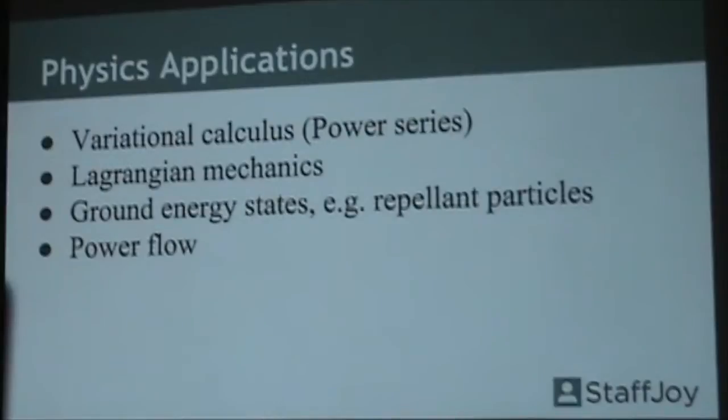One of the very specific examples in variational calculus is Lagrangian mechanics. You can figure out motion of particles based on optimization. We'll do one of those examples later. As you move forward, there's a lot of different examples - you can look at how particles repel and minimize their energy.